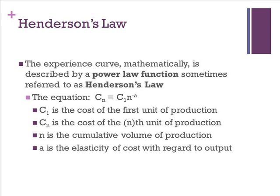Here's the equation. C sub 1 is the cost of the first unit of production. C sub n is the cost of the nth unit of production. n is the cumulative volume of production, and a is the elasticity of cost with regard to output.